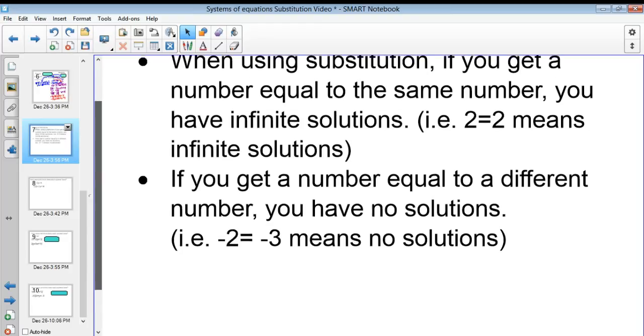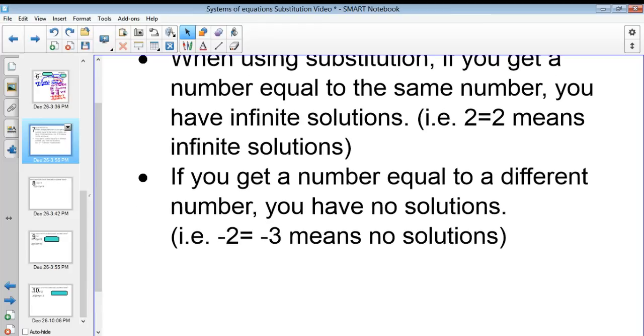If we were to write those equations out in terms of y equals or get them in the exact same form, we would realize that they're the exact same equation of the line. They're going to intersect everywhere. Okay? So, infinite solutions. If you get a number equal to a different number, like negative 2 equals negative 3, that means no solutions. What that means is that you have two lines that are parallel. Once you substitute everything in, you have a difference of those y intercepts, which means that you have no solutions. Right? Because they're never going to intersect.